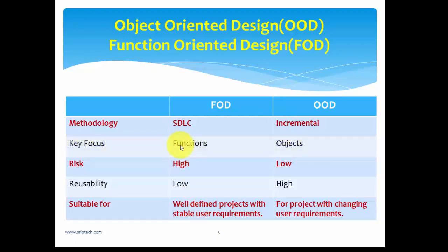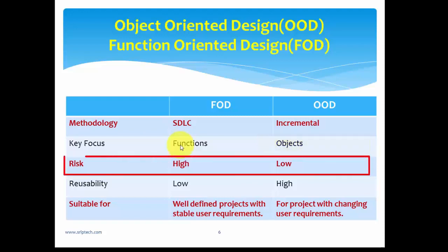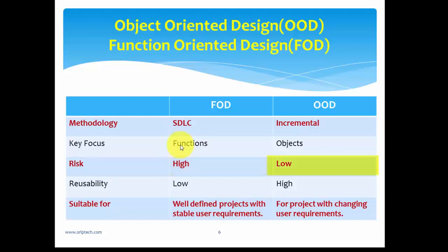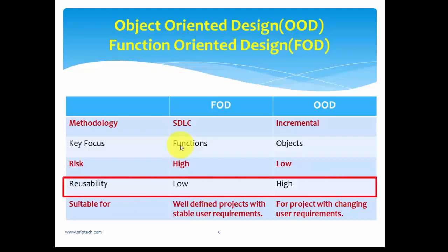In terms of risk, function-oriented design carries a high risk, whereas object-oriented design has a low risk. Risk refers to uncertainty — problems that may occur in the future. When designing software using a function-oriented approach, there is a higher probability of risk. With object-oriented design, the risk level is low, so if you want to minimize risk in your software, object-oriented design is the better choice.